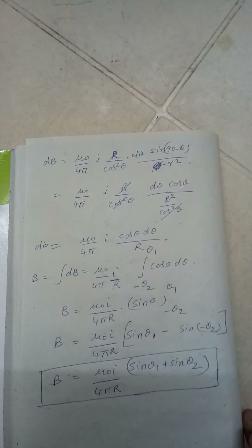Sine of (90 minus theta) is cos theta, and small r squared is R squared divided by cos squared theta. The cos squared theta terms cancel, and you are left with: dB equals (mu 0 by 4 pi) times I cos theta d theta divided by capital R.